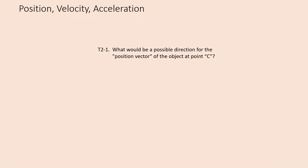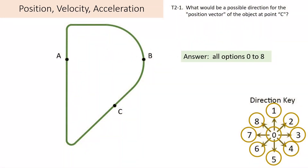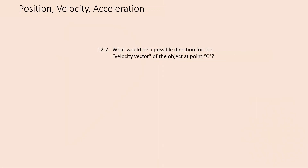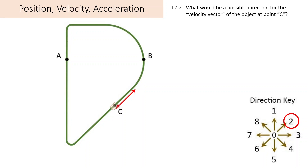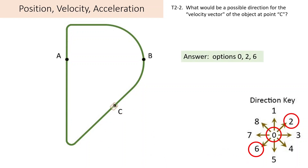Quiz T2 is to look at position, velocity, and acceleration at point C. Again, you got the idea with the position — you could move the coordinates anywhere you like, and therefore make the position arrow go from the origin to the point of interest in any of these directions. For velocity at point C, our only choices are to go up the incline — option 2 — or down the incline — option 6 — or to be at rest — option 0.